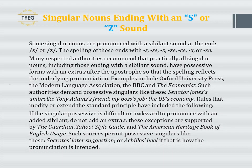Some singular nouns are pronounced with a sibilant sound at the end — /s/ or /z/ — spelled with S, Z, or X. Many respected authorities, including Oxford University Press, the Modern Language Association, the BBC, and The Economist, recommend that practically all singular nouns — including those ending with a sibilant sound — have possessive forms with an extra S after the apostrophe, so that the spelling reflects the underlying pronunciation. Such authorities demand possessive singulars like: 'Senator Jones's umbrella', 'Tony Adams's friend', 'my boss's job', 'the U.S.'s economy'.